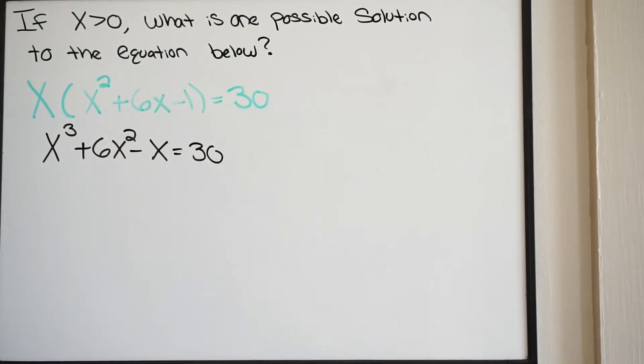The next step I want to do is move this 30 over to the left side because I want to try and factor this polynomial. If I can factor this polynomial, I can solve for possible solutions by solving for x. My goal here is to try to factor this polynomial.